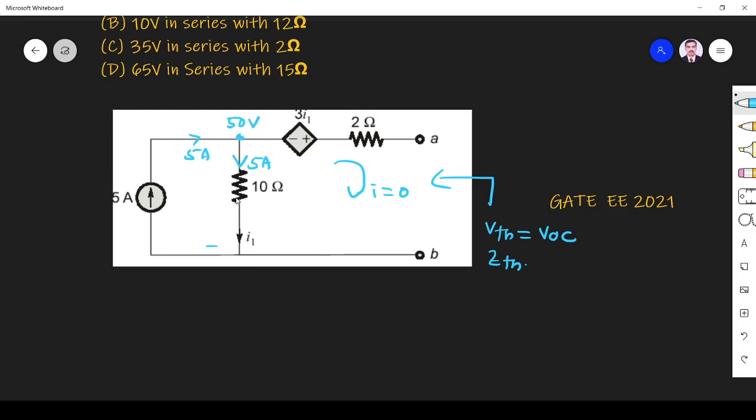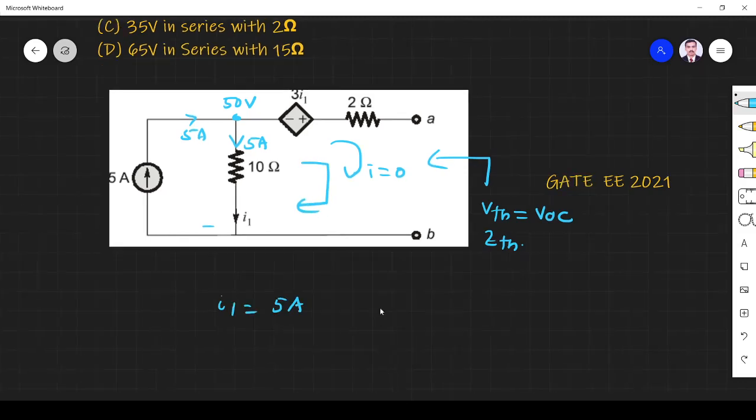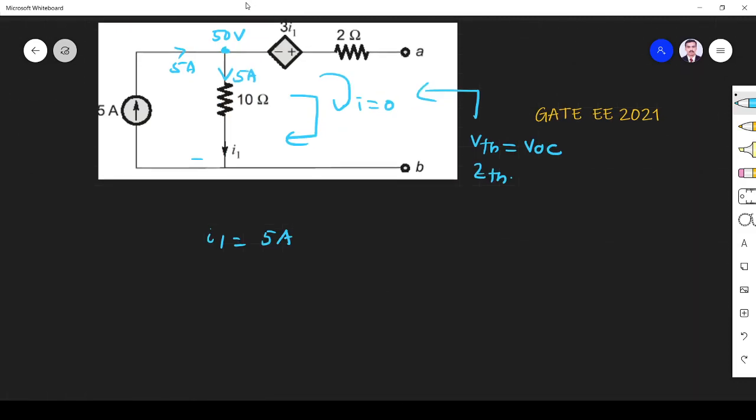What is i1? i1 is V by R, so 50 by 5 equals 5 amps. So I apply KVL here in this loop - it is 50 volt plus minus. Here i1 is 5 amps, so it is 15 volts. Apply KVL here, so it is minus 15.